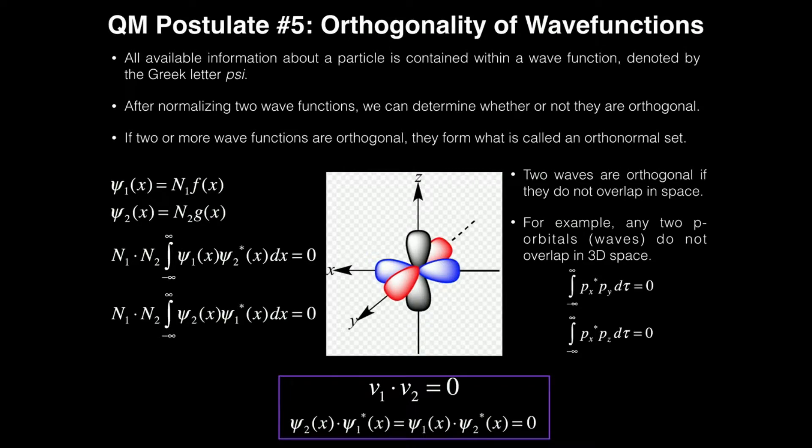We talked about how you can calculate expectation values in the previous videos, but now we can actually determine whether or not two wave functions are orthogonal to each other, whether or not they are perpendicular. And this may seem kind of trivial, but it turns out that it's actually important for future applications of this stuff.